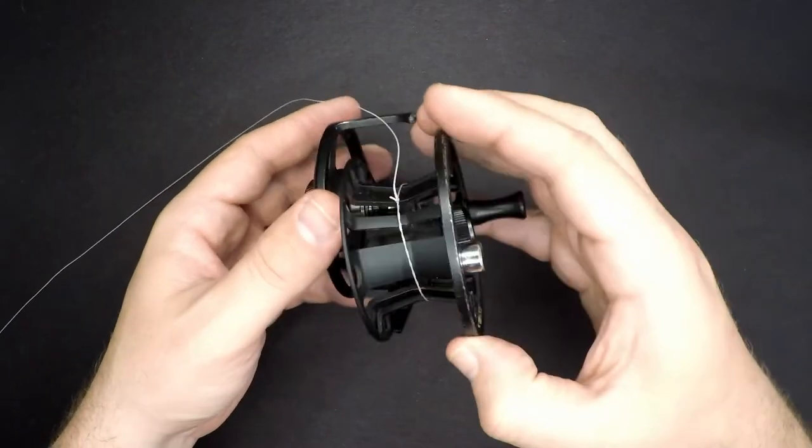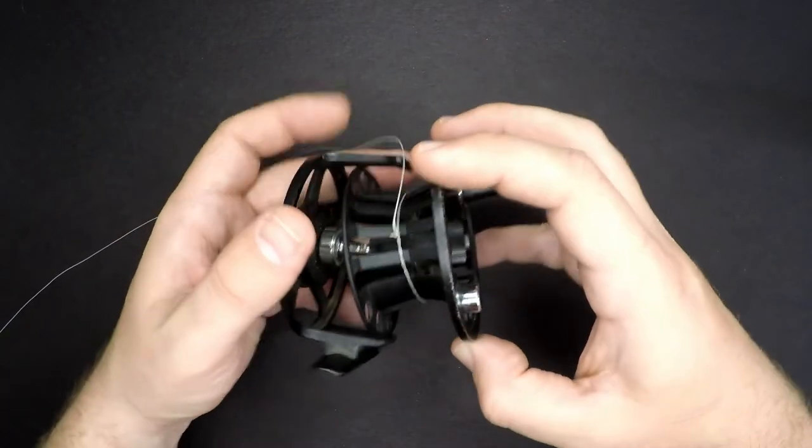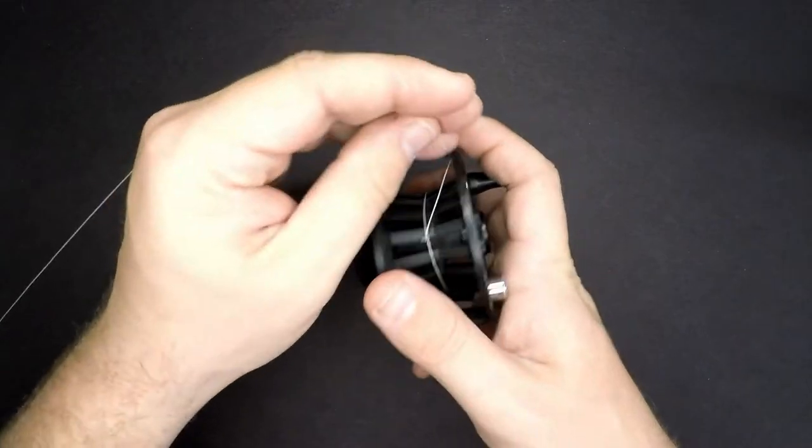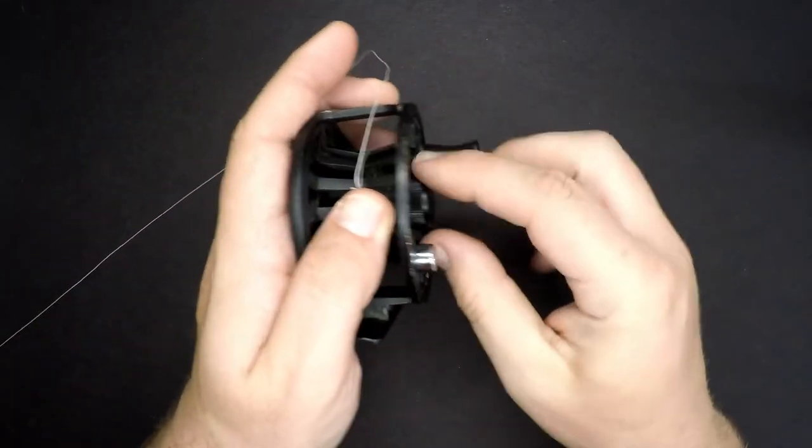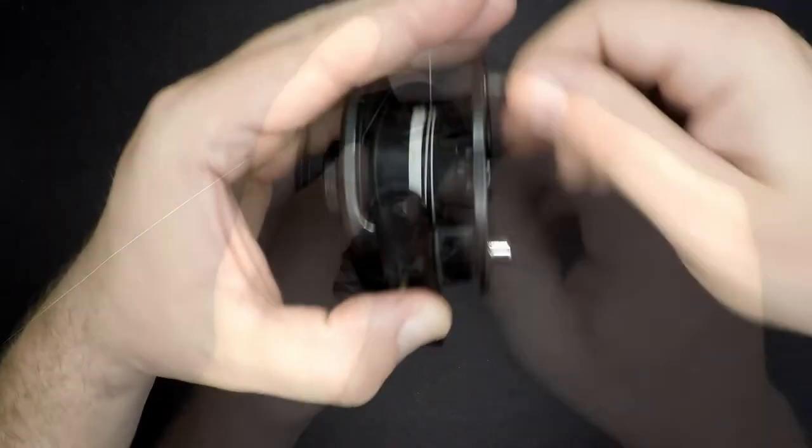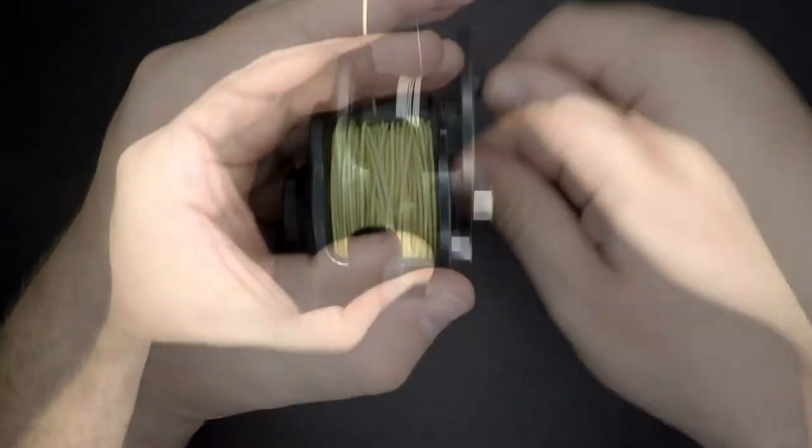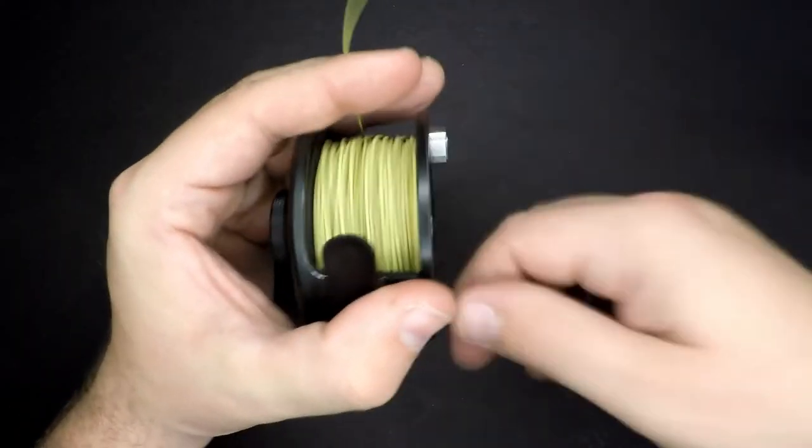So at this point, it's nice and tight. I'm going to put my reel back together. And I'm going to begin re-lining my reel. And once I've got all my line back in there, the knot's complete and I've re-lined my reel successfully.